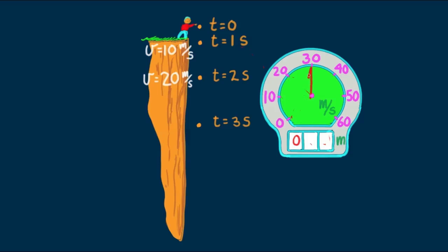One second later, the boulder again gains 10 meters per second, and the speedometer reading is 30 meters per second. And our odometer reading is 45 meters.